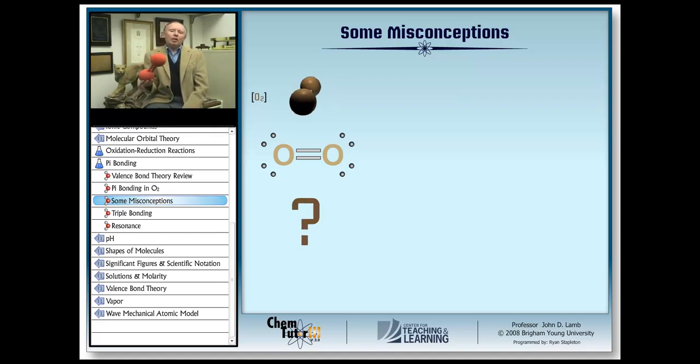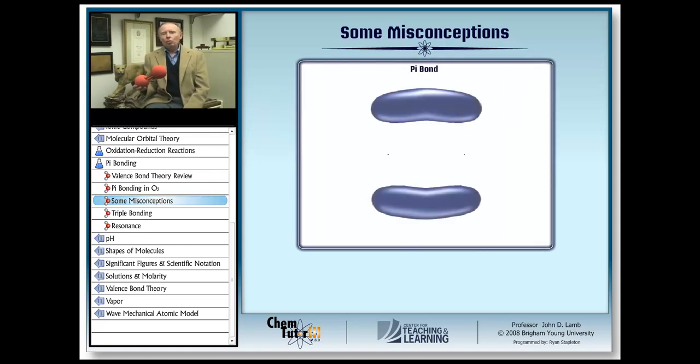Well, some students get this mixed up with the shape of the electron cloud in the pi bond. Let's take another look at just the pi bond in the double bond. Notice how it almost looks like two bonds, not one.